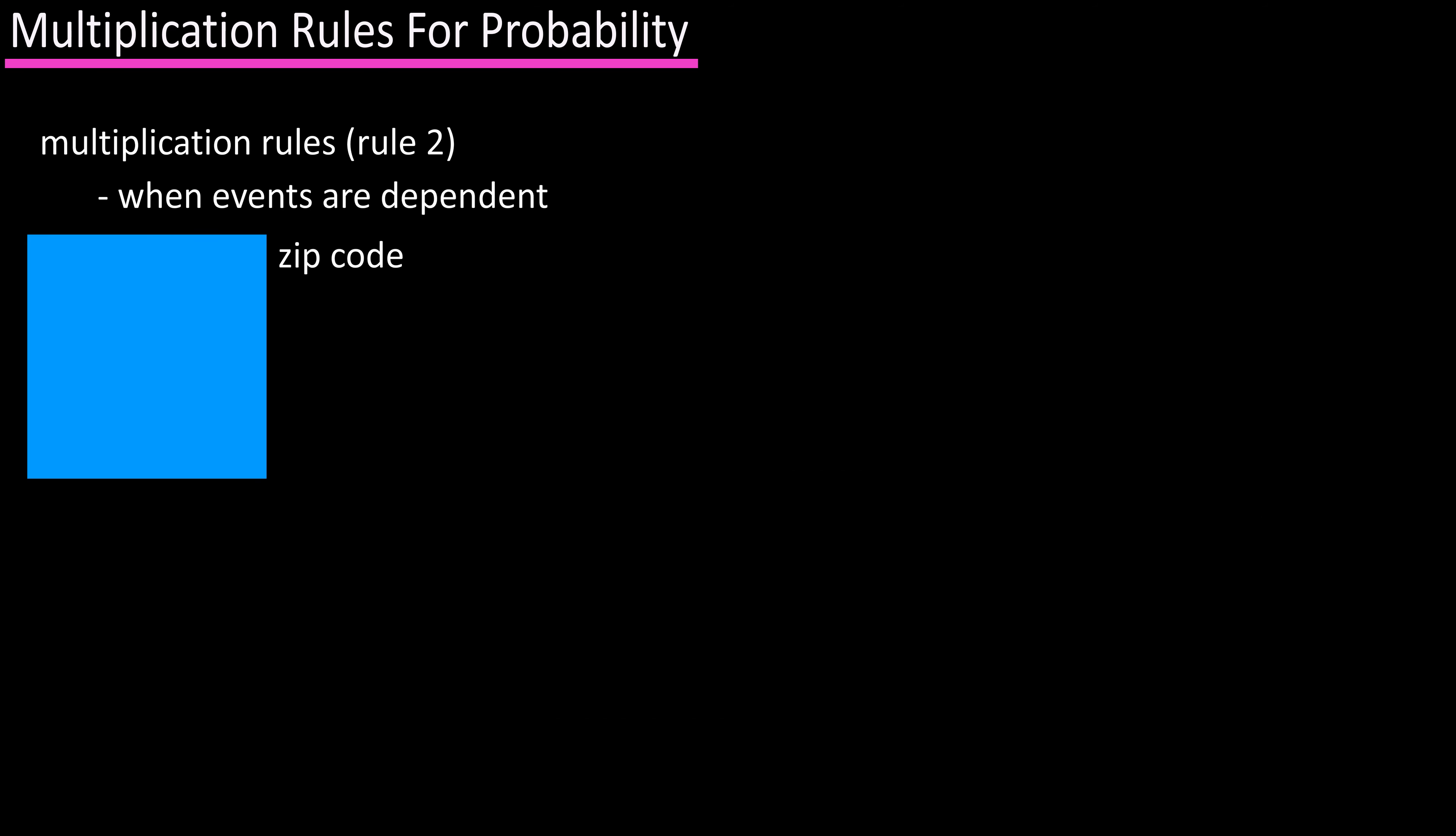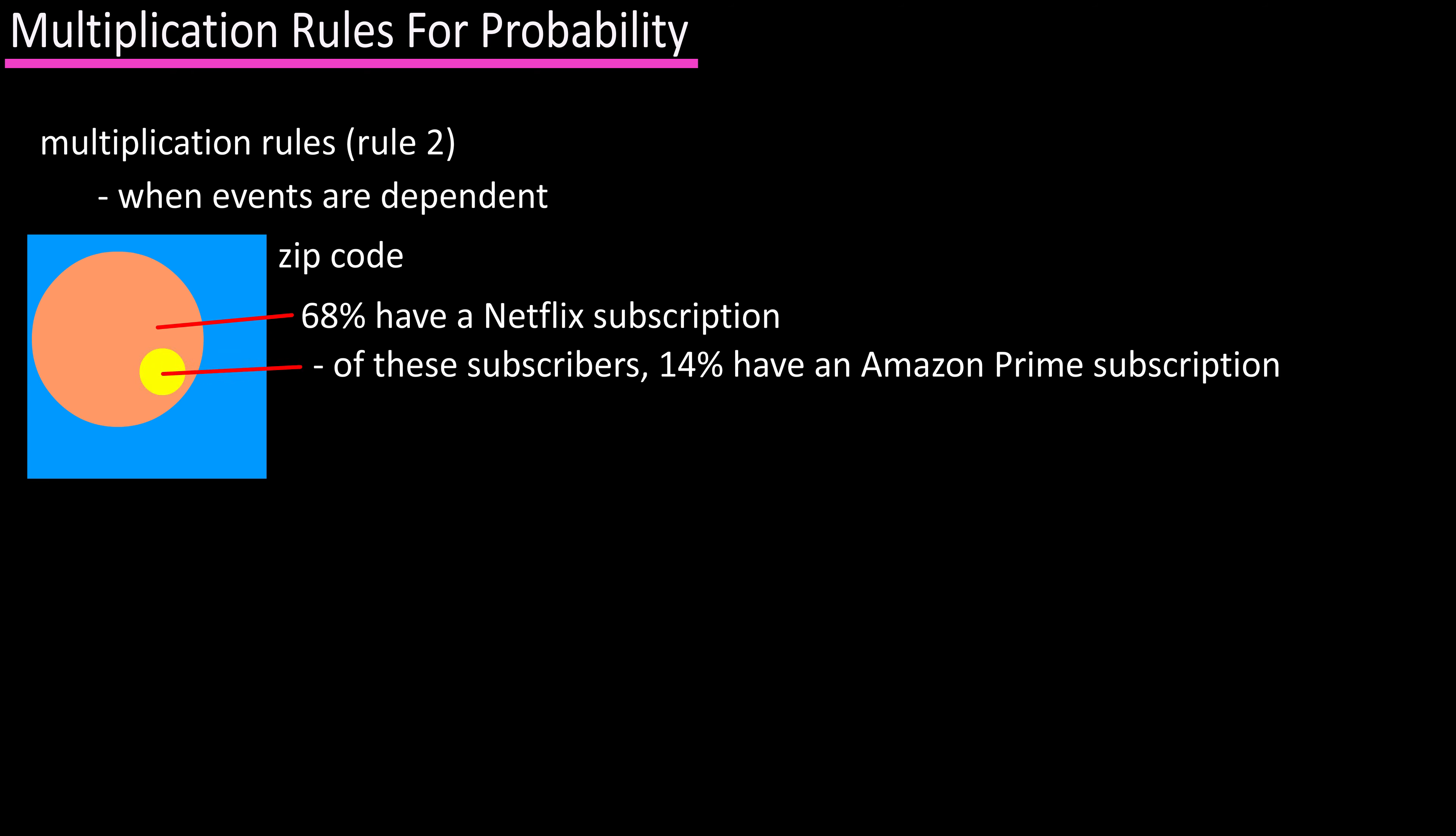As another example, let's say that in a certain zip code, 68% of homes have a Netflix subscription, and of these subscribers, 14% also have an Amazon Prime subscription. Based on this data, what is the probability of randomly selecting a house that has a subscription to both services?